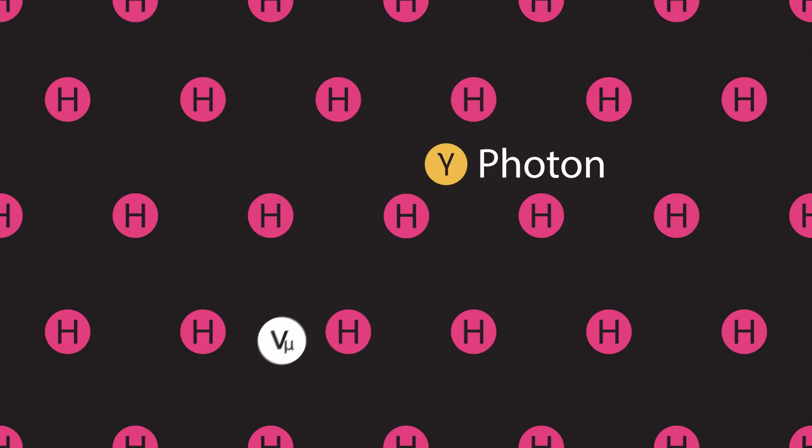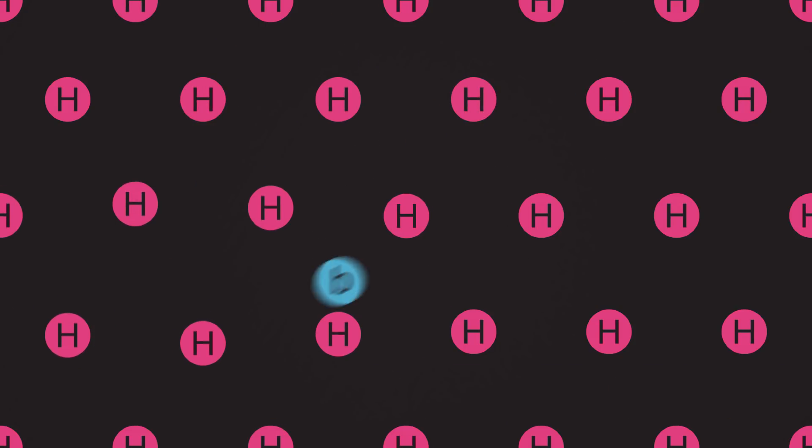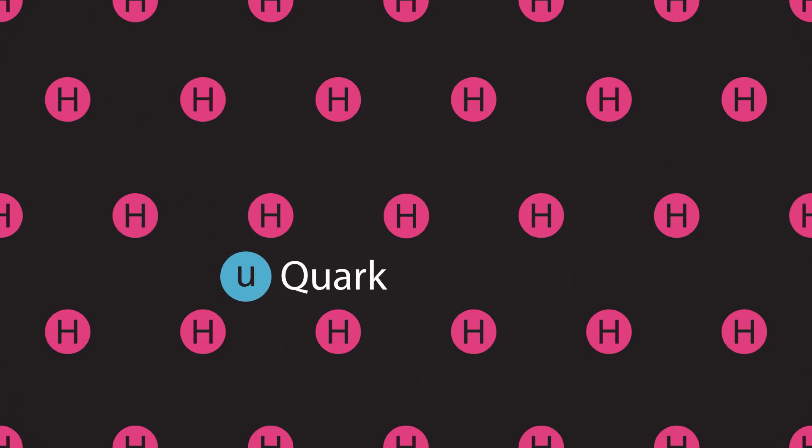Some of these particles, like photons, whizz through and barely interact with it, resulting in very small mass. Other particles, like quarks, drag through and interact with the field a lot, which results in a larger mass.